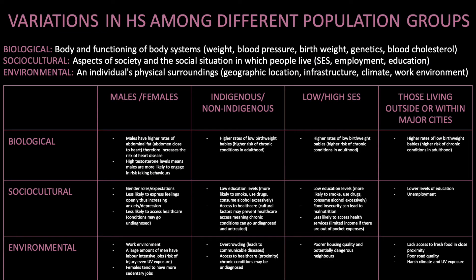Variations in health status among different population groups. Biological factors refer to the body and functioning of body systems; they include weight, blood pressure, birth weight, genetics and blood cholesterol. Sociocultural factors are aspects of society and the social situation in which people live; they include socioeconomic status, employment and education. Environmental factors are an individual's physical surroundings including their geographic location, infrastructure, climate and work environment.